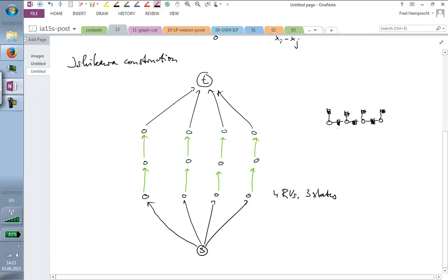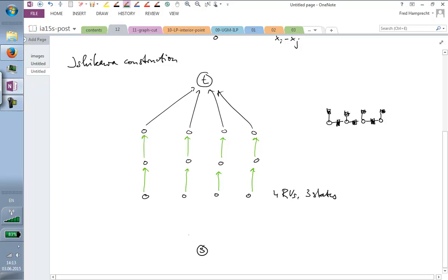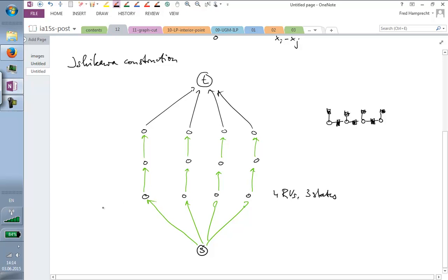So if I draw it in factor graph notation, then I have four random variables and I have a smoothness prior or factor between each pair in this tiny chain. And I have these unaries. So this is a one-dimensional graphical model, but the same construction works. If you have two dimensions, it only becomes harder to draw.